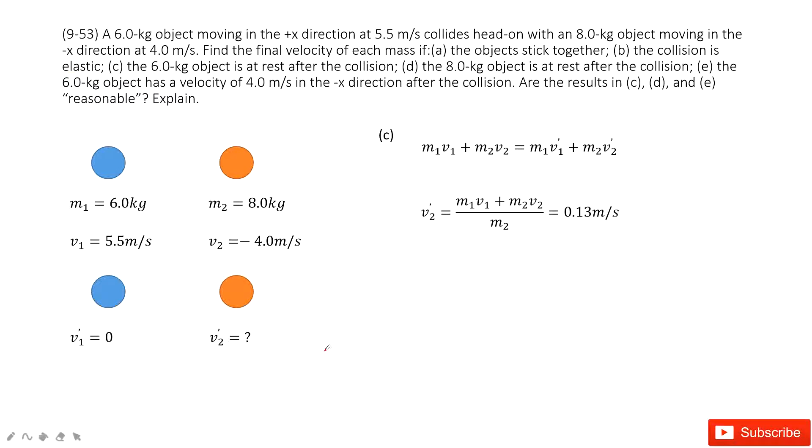The next one is, it tells you the final, after the collision, the velocity for the mass one is zero, stationary. Calculate for V2 prime. So it's easy,